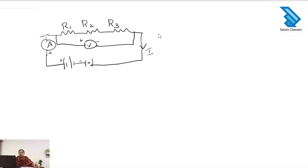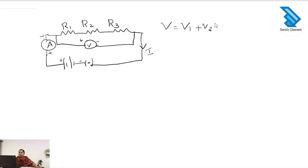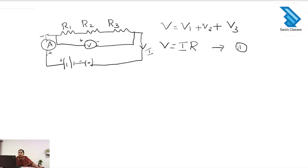But the potential difference V will be different. The potential difference across each resistor will be different at each point. So we can write the total voltage V as V1 plus V2 plus V3. We know the general relation V is equal to I into R — we can put this as equation 1.